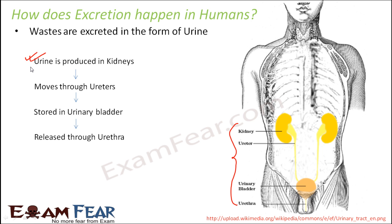You will learn about this complex process in higher classes, maybe in class 11. If you are interested, you can refer to the video on the excretory system of class 11, where the entire process of urine formation is explained in detail. Urine formation takes place inside the kidneys, and then urine moves through the ureters.